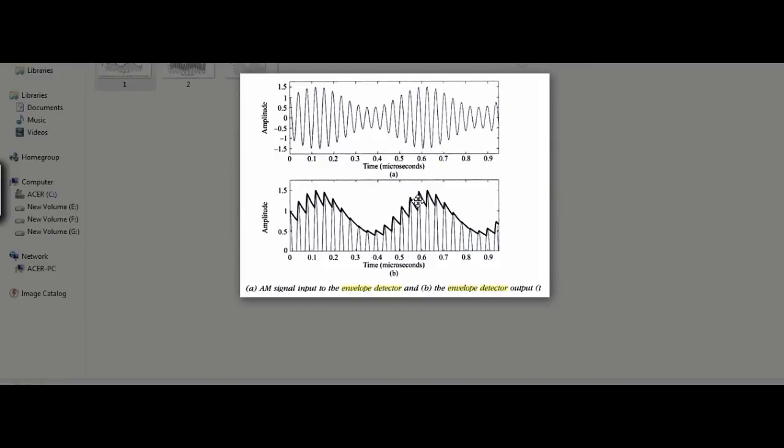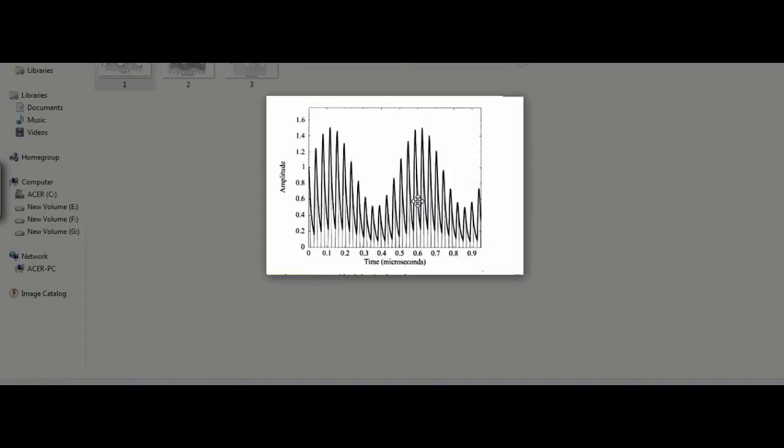Let's see another case where R_L C is poorly designed. That is R_L C value is much much less, it is very small value. If R_L C is less then we get the envelope in this shape. Because it will follow each and every wave based on the AM signal. You cannot get the proper message signal. It is clearly not satisfying the equation. This is the second case where the product of the time constant R_L C is very very small.